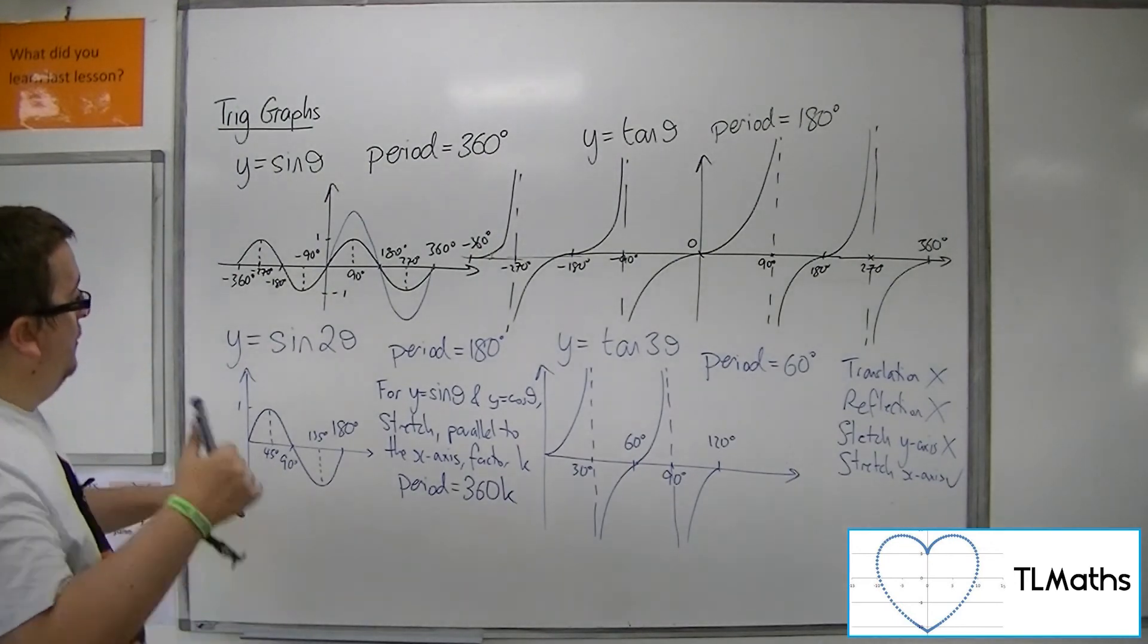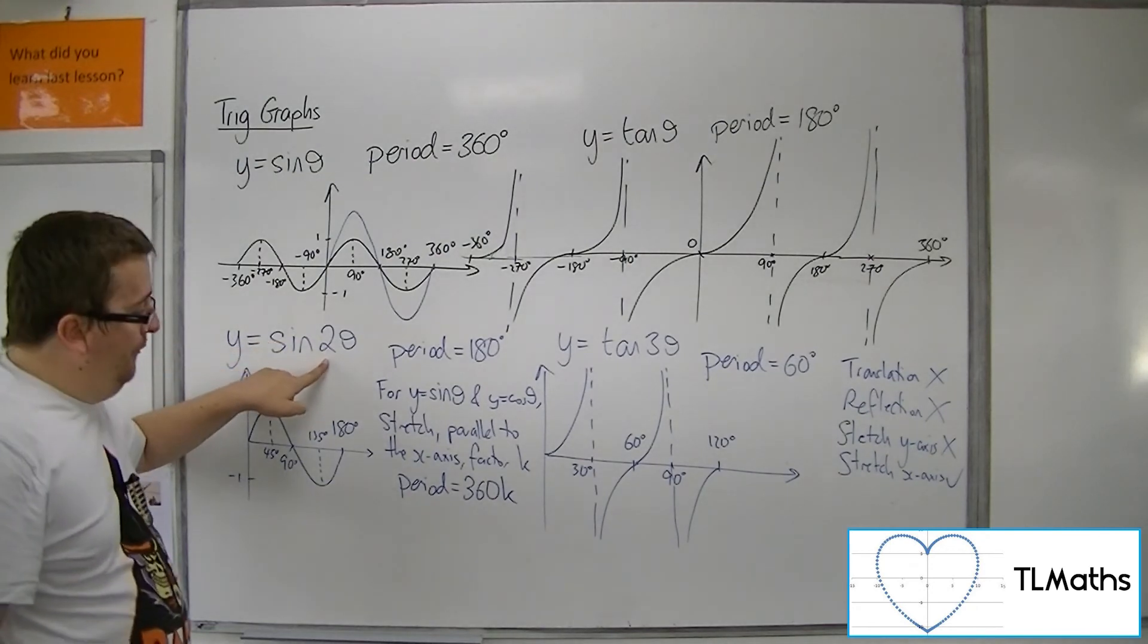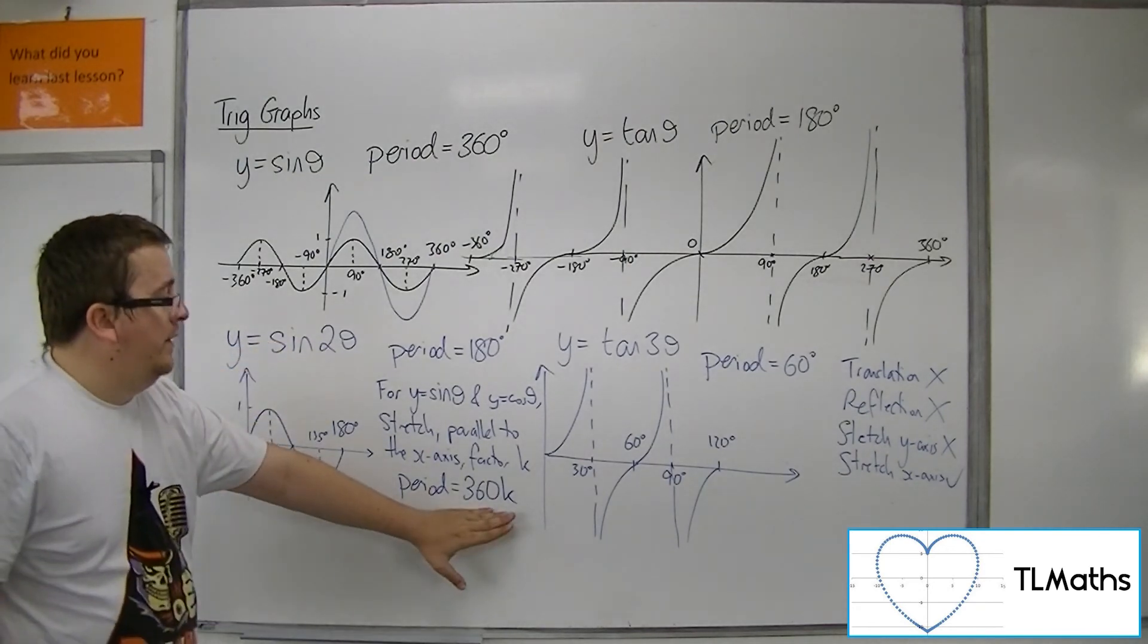So the fact that this was factor 1 half means we had a period of 180 degrees.